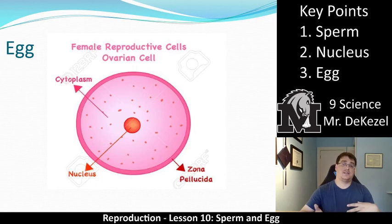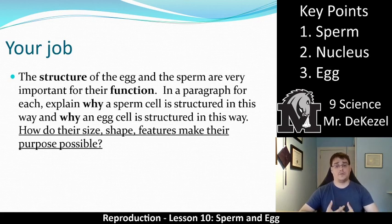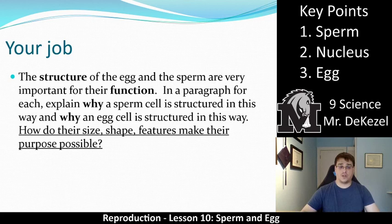Every single piece we've talked about has a particular function and a reason why it's there. I'd like you to connect the structure of the egg to its function, and the structure of the sperm to its function — essentially what we've been talking about, but in your own words. Your notes have terms and diagrams; I want you to explain why a sperm cell and an egg cell are each structured the way they are, using the terms but writing in your own words. It should be a paragraph for each. Think about the size, shape, and features that make each cell unique and able to perform its job.